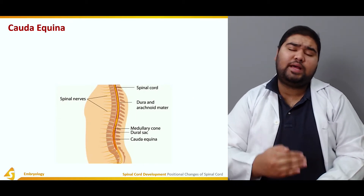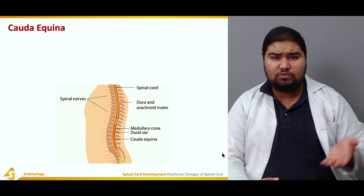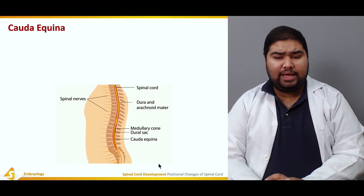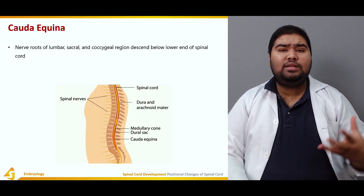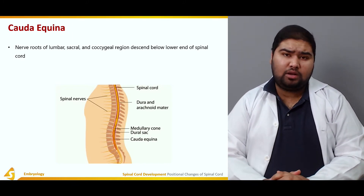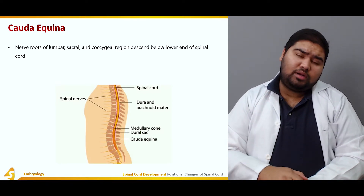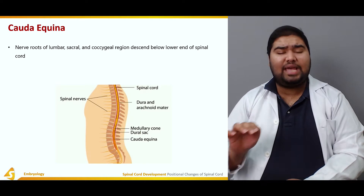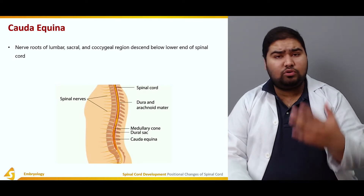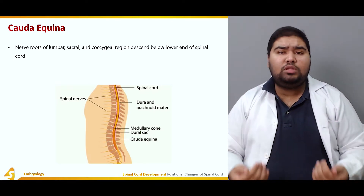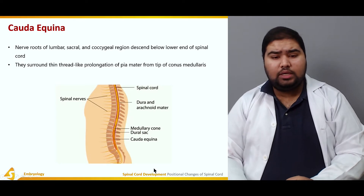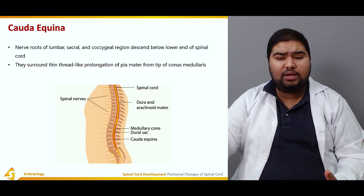The spinal cord continues to regress and comes to lie at a progressively higher position. The nerve roots of the lumbar, sacral, and coccygeal regions descend below the lower end of the spinal cord. In adults, the lower end of the spinal cord lies at the lower border of L1, and all these nerve roots come to lie below the termination of the spinal cord.